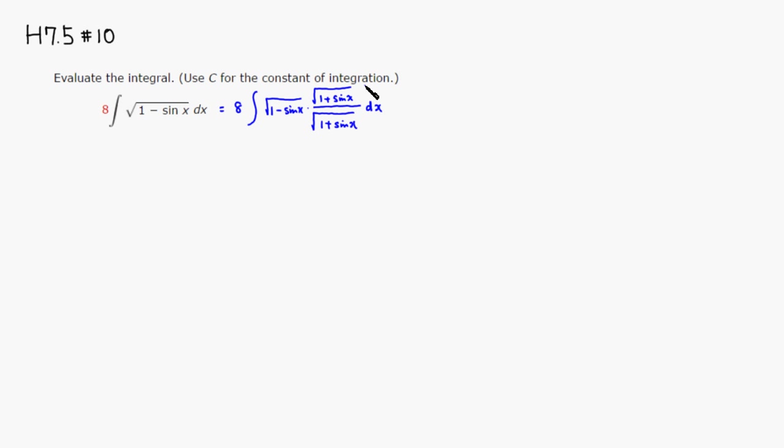And once you've done that, you're going to get this. This is going to be equal to 8. So square root of 1 minus sine and the square root of 1 plus sine, you're going to get the square root of 1 squared, which is 1, minus sine squared of x. And the denominator pretty much stays the same, so just copy the denominator, which is square root of 1 plus sine of x, with respect to x.